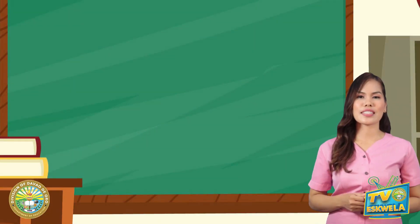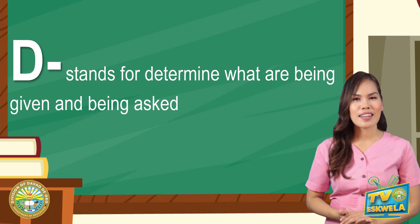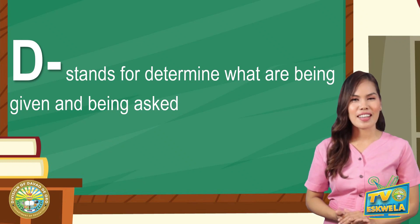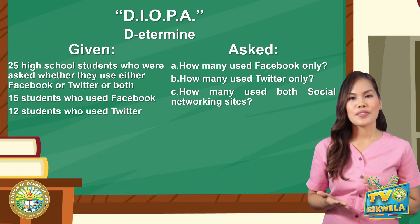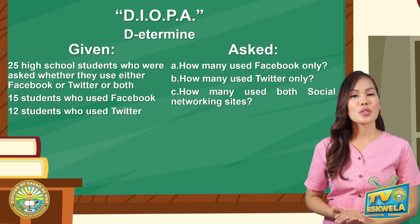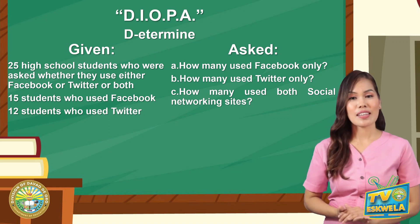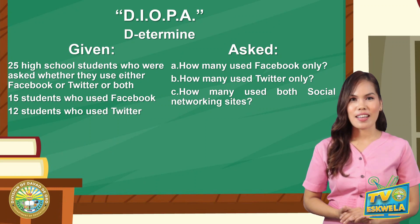To find the solution, I suggest that you use the steps of the acronym DEUPA. D stands for determine what are being given and what are being asked. Here are the given: 25 high school students who were asked whether they used either Facebook or Twitter or both; 15 students who used Facebook, and 12 students used Twitter. What are being asked? How many students used Facebook only? How many used Twitter only? And how many students used both social networking sites?